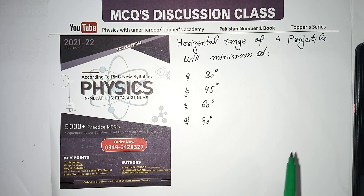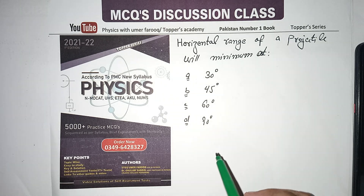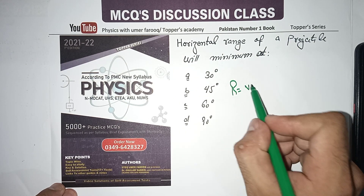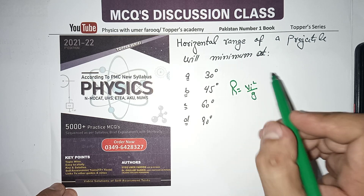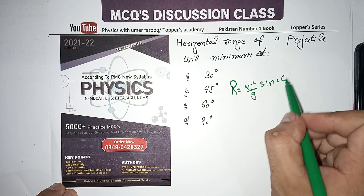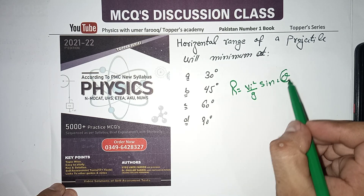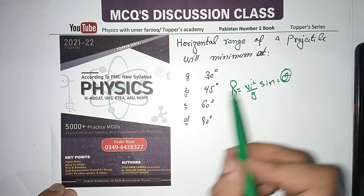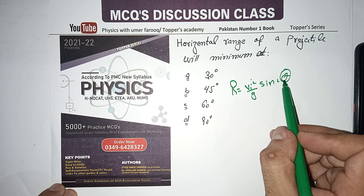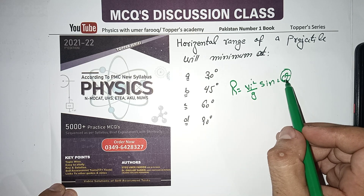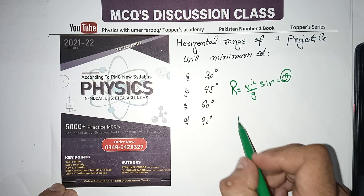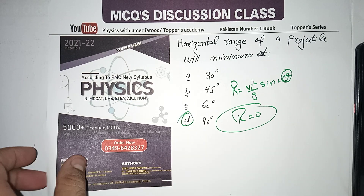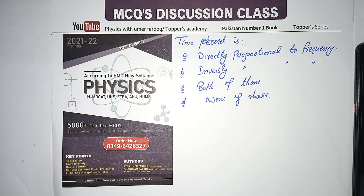Next MCQ: Horizontal range of a projectile will be minimum at which angle? The formula is R = v²·sin(2θ)/g. At 30°, not zero; at 45°, maximum; at 60°, sin(120°); at 90°, sin(180°) = 0. So the minimum range is at 90° — option D is correct.